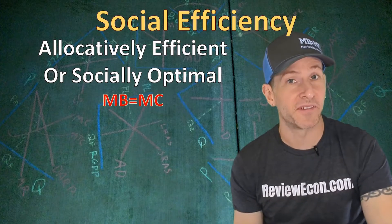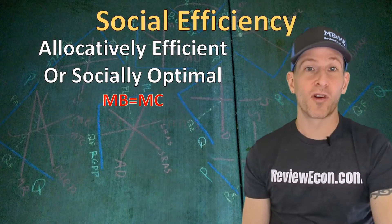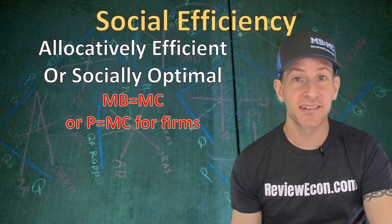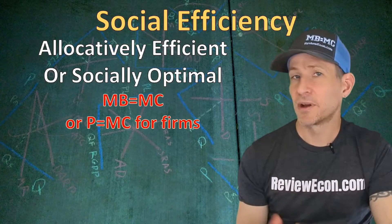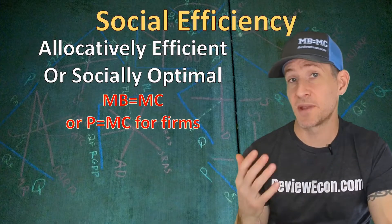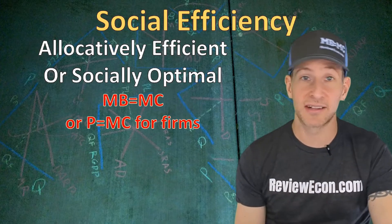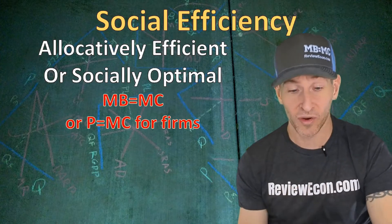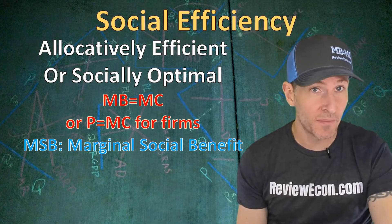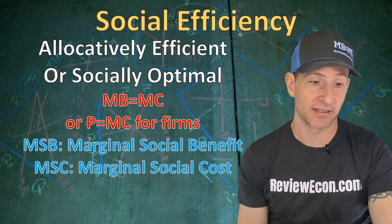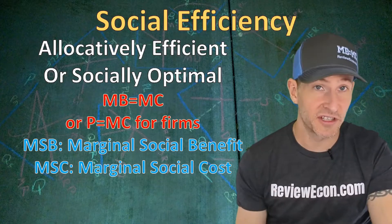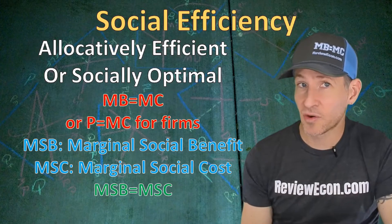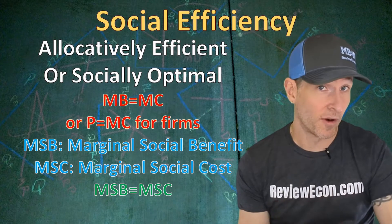Allocative efficiency and socially optimal are the same thing — it means we're producing where the marginal benefit equals the marginal cost. In units 3 and 4, we said that price equals marginal cost when talking about firms, because when firms produce where price equals marginal cost they are allocatively efficient or socially optimal. But in previous units we were looking at costs and benefits for the people buying or selling the product. Here, we're looking at the cost and benefits for society as a whole — the marginal social benefit and the marginal social cost. The socially optimal, allocatively efficient outcome is where marginal social benefit equals marginal social cost, meaning the quantity we're getting for society is where all marginal benefits equal all marginal costs.